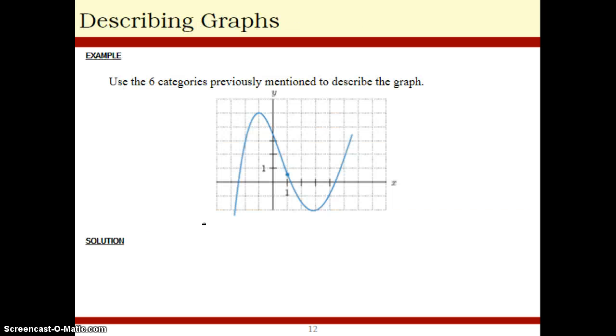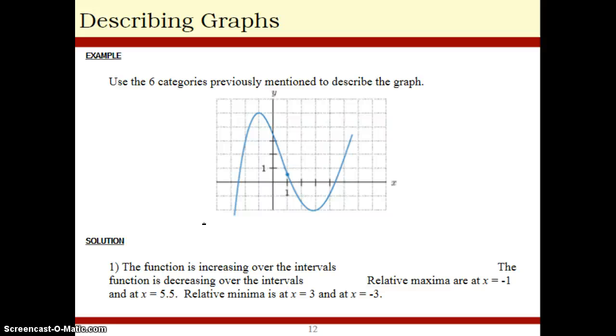So, for example, if you're asked to use the six categories mentioned to describe this graph, do you see that this function is increasing over the intervals negative 3 to negative 1 and 3 to 5.5?